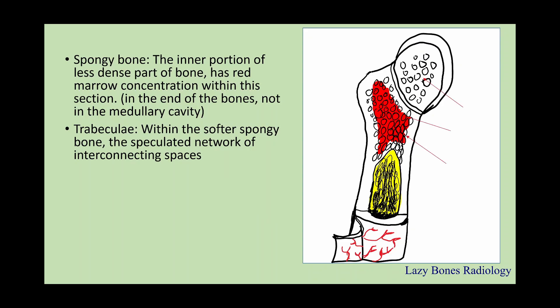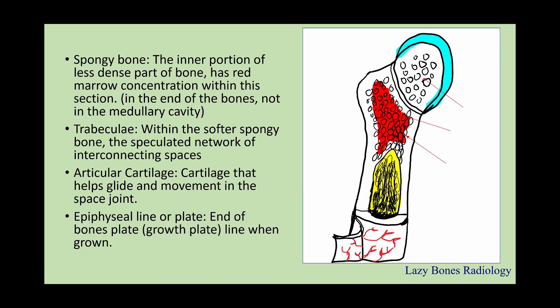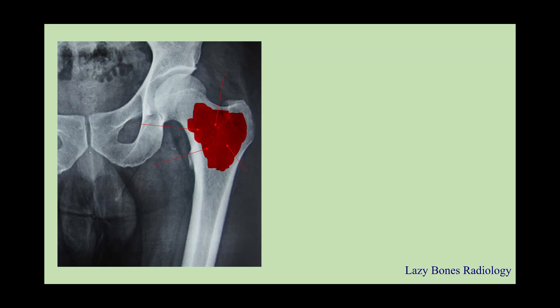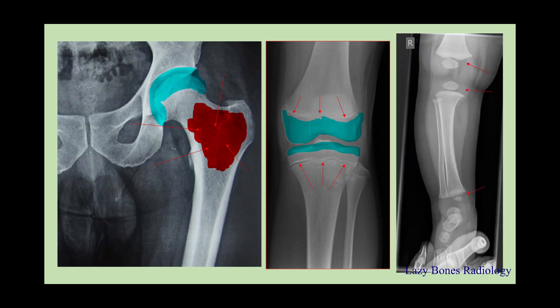Next is the trabeculae, which are within the soft spongy bone and form a spiculated network of interconnecting spaces. Next is the articulating cartilage — the cartilage that helps glide and assist in the movement within the joint space. The epiphyseal line and plate are at the ends of the long bones. It forms a line when fully calcified and the bone has stopped growing, and is known as a growth plate when they are still growing. As you can see here, these are the epiphyseal lines which are almost calcified but still growing, while on the right hand side these are the growth plates not yet fully calcified.